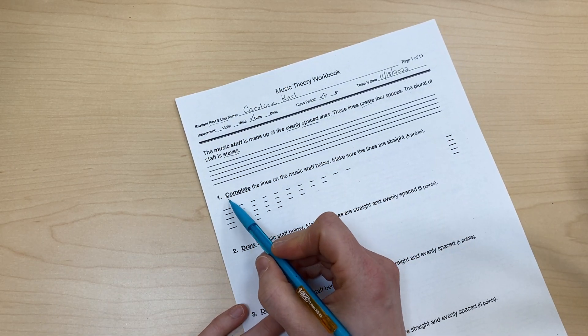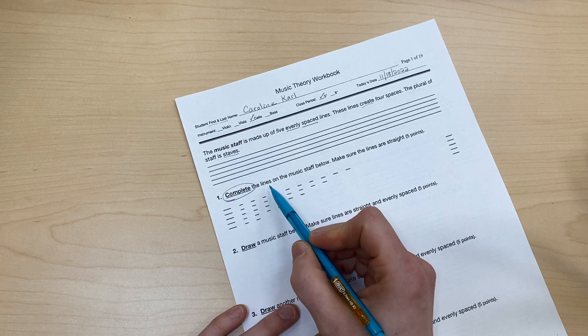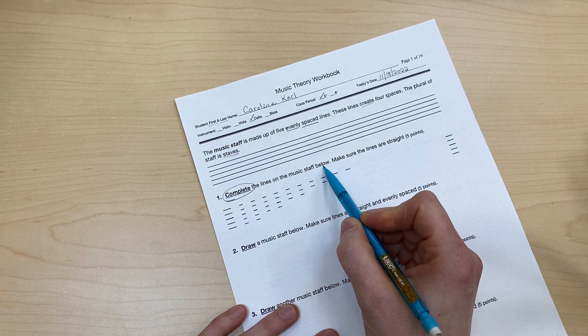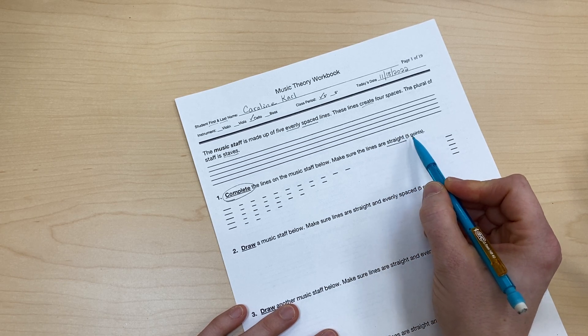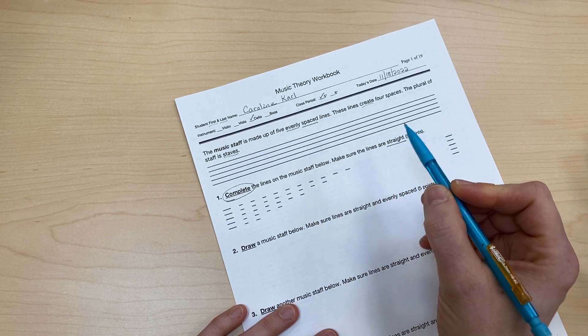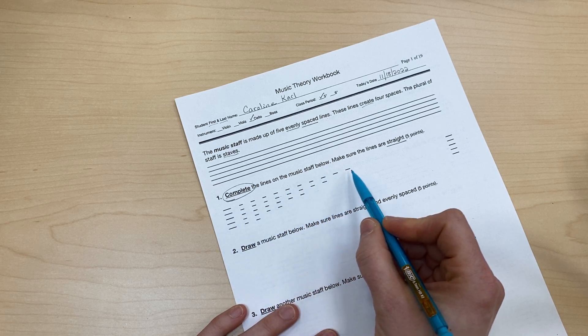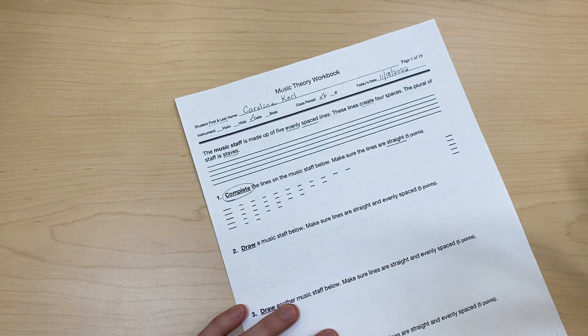Now number one: complete the lines on the music staff below. Make sure the lines are straight. And this is worth five points. So now I can see that the lines are started for me, and I just need to finish them.